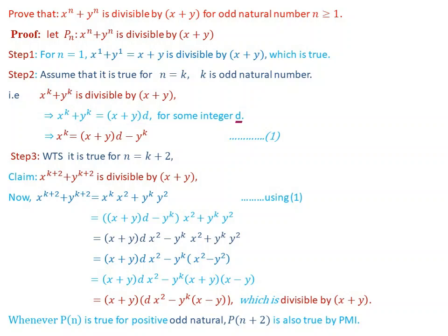By rearranging this, we obtain x to the power of k equals x plus y times d minus y to the power of k, because x to the power of k plus y to the power of k equals x plus y times d. So x to the power of k equals x plus y times d minus y to the power of k. Call this Equation 1. Step 3.